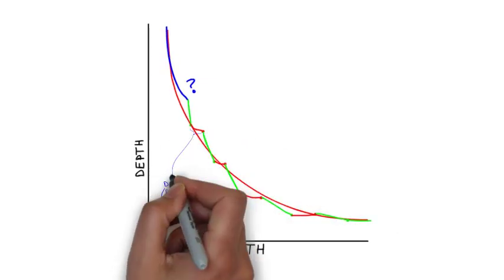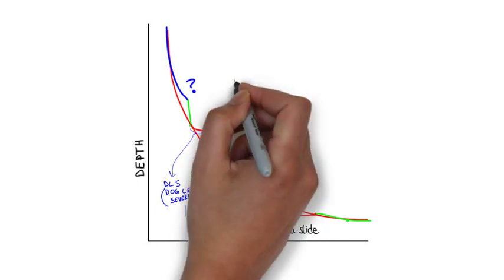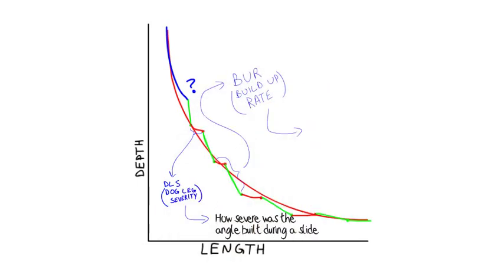In the well, the maximum angle build is known as dogleg severity, while the average angle change is the buildup rate.